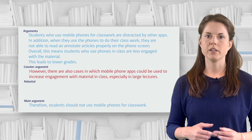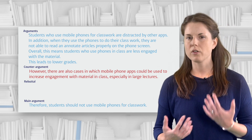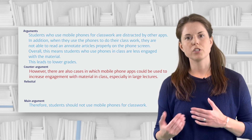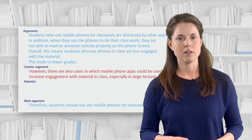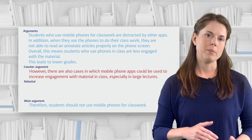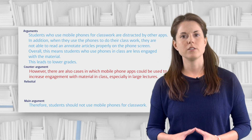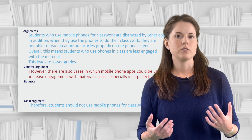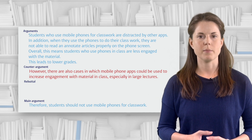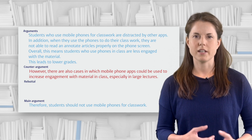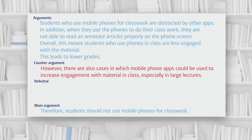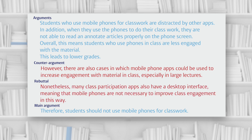To do this, we have to find a way to reject or rebut the counter-argument. To show why this counter-argument isn't strong enough to defeat our main argument, we have to point out why our main point still stands despite the point just made. One way we can do this is to point out that even though there are useful class participation apps, these apps can also have a desktop interface, so they can be accessed using a laptop. Let's add that rebuttal to our argumentation. Now the counter-argument is dismissed and we're back on track to argue that mobile phones should not be used for classwork.